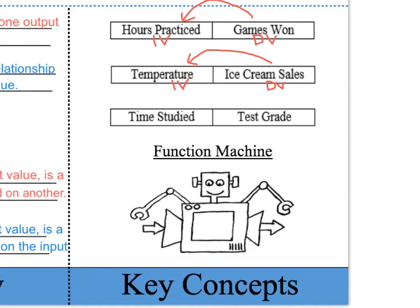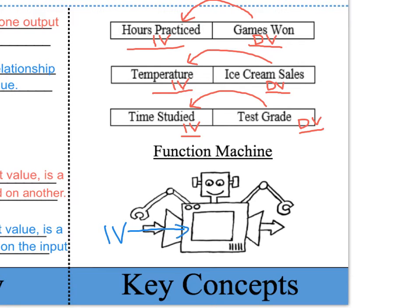The next example is time studied. Time studied is your independent variable. Your test grade is the dependent variable because your test grade is going to depend on the amount of time that you studied. So if I input a lot of hours of practice, I will win more games. If I input the temperature going up, then the output would be ice cream sales will go up. If I input more hours of studying time, then the output would be my test grade will go up. Think of a function as a function machine — we take a number that is the independent variable, or the input, put it into this machine, and the output will be a number that is the dependent variable.